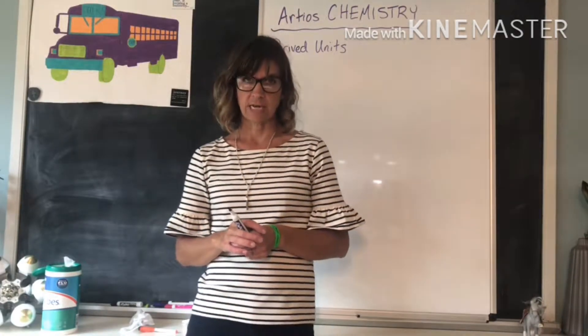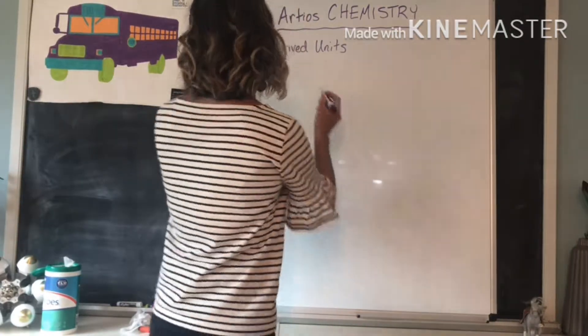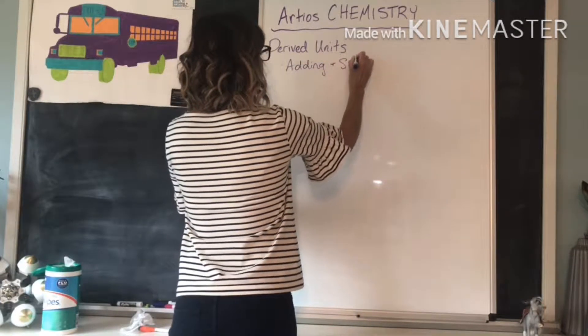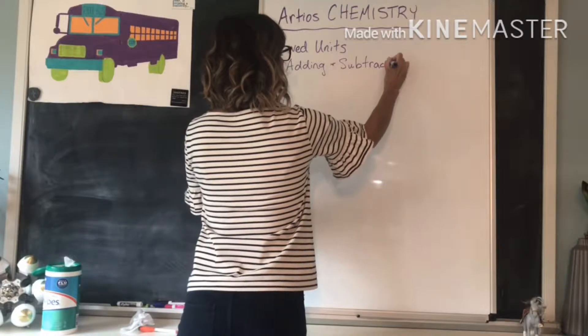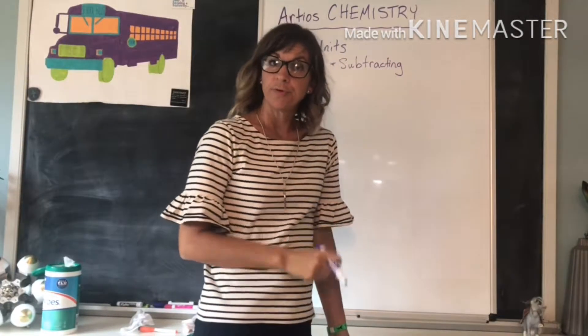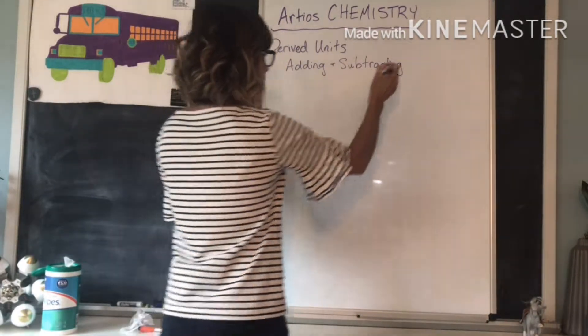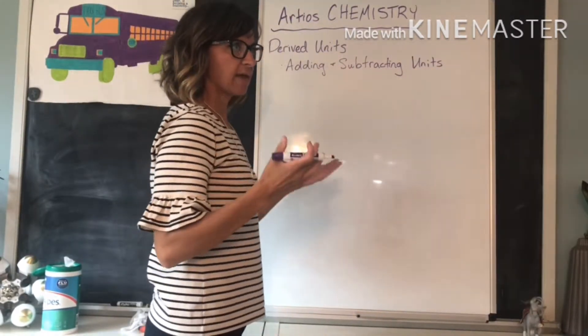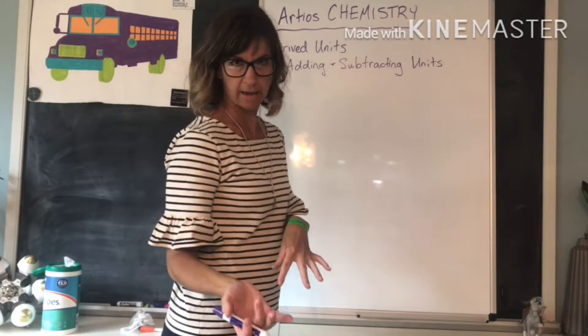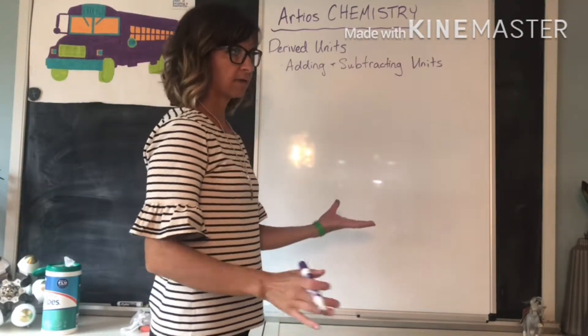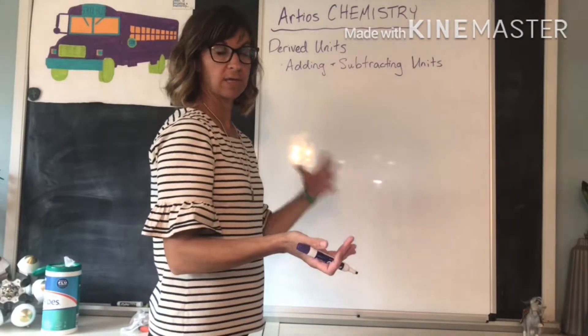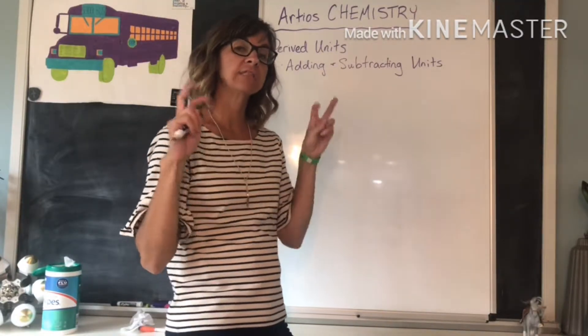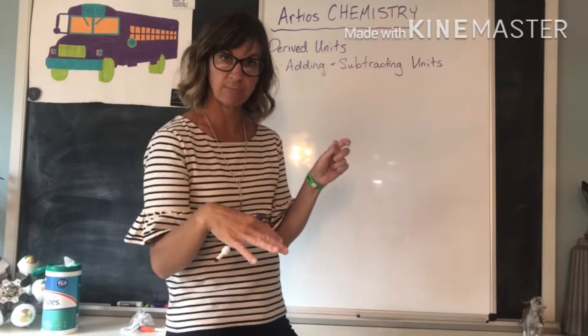First of all, let's take some notes on adding and subtracting with units. This might all be really simple for you, or it might be a really good review for you. But we're going to go through it just the same. Just like in algebra, how you can only add like terms - like you can add 3x plus 6x and get 9x, but you can't add 3x plus 6x squared, because x and x squared are not what they call like terms. When you're adding or subtracting units, you have to have like units or similar units or the same units.